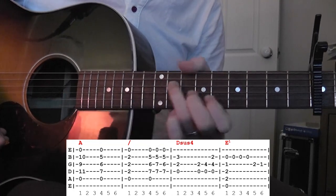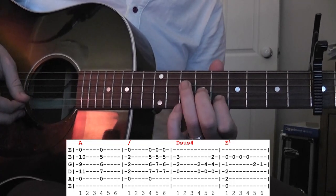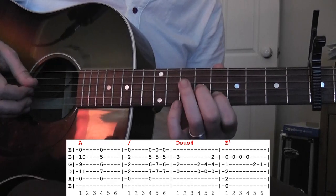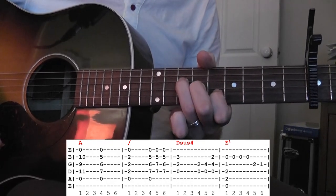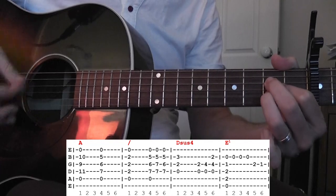And then you go down to the F shape, which is 8, 9 and 10th fret. And then you go down to just an open A chord.